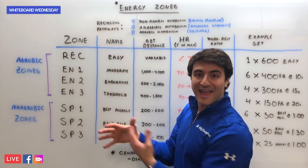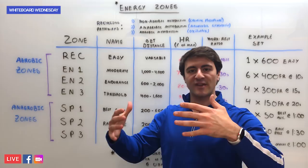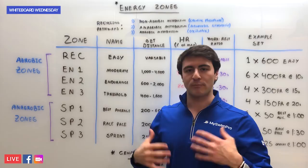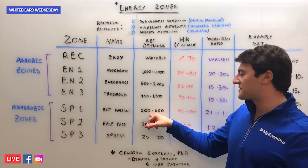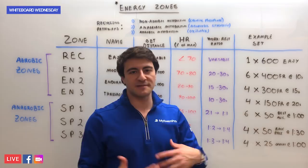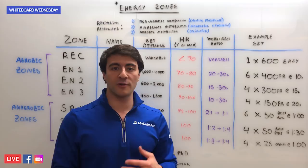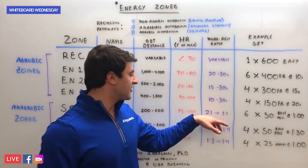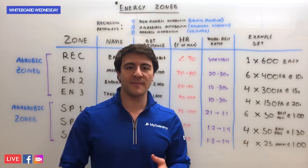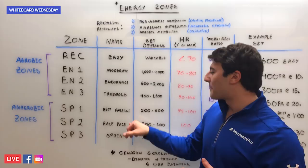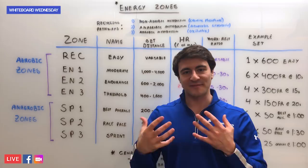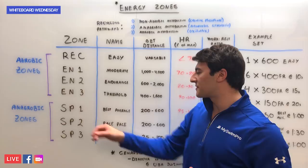Moving from aerobic zones into anaerobic zones, the intensity is really amplified and the set duration shrinks down. You're not swimming as far a distance, but you're pushing yourself much harder, focusing on applying a lot more power, intensity, and tempo into your stroke. SP1 is referred to as Best Average — a set anywhere from 200 to 600 meters. An example set would be six 50s best average on the minute, holding under 30 seconds or a 200 or 400 pace if racing. Work-to-rest ratio is anywhere from two-to-one to one-to-one, with heart rate at 95 to 100%. Best Average is one of the most uncomfortable training zones because you're pushing so hard without getting much rest.